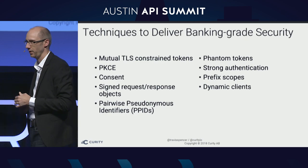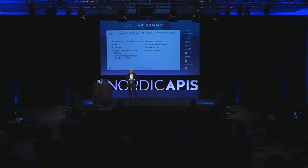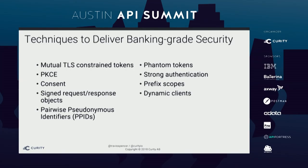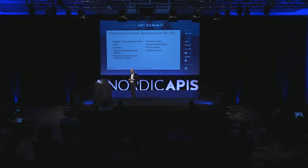Here's a list of techniques — if you're going to snap any photos of the presentation, this is probably the one. This is your catalog of things that you can do in your OAuth implementation to provide financial grade security. We've got mutual TLS constrained tokens, proof key for code exchange or PKCE, interactive user consent to make sure users are authorizing access to their data, signed request and response objects, and pairwise pseudonymous identifiers. I'm going to talk about all of those in this talk.